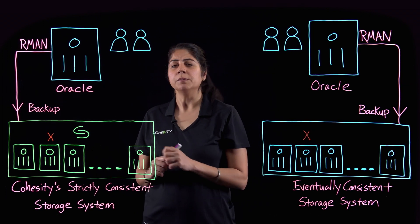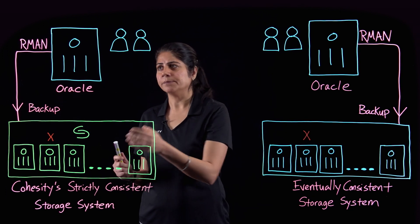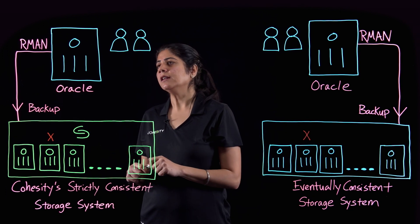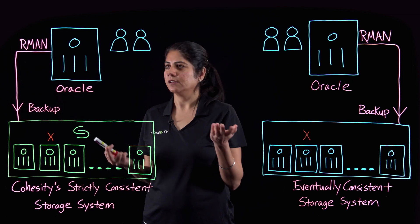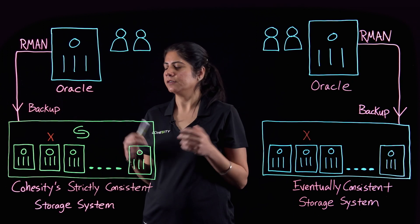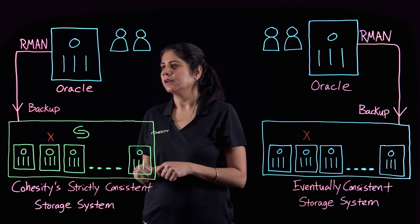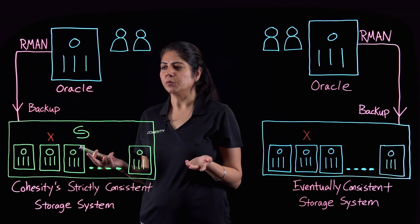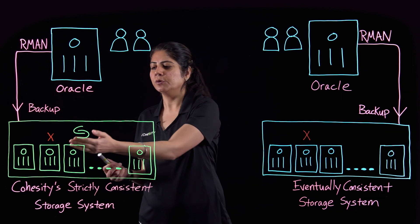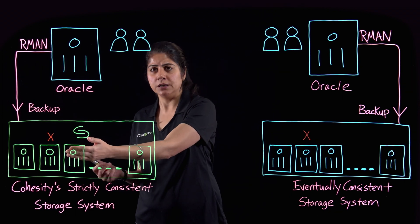What happens with Cohesity? Your Oracle RMN application continues to run as if nothing happened. The backup continues from where it was, even if a node were to permanently fail.